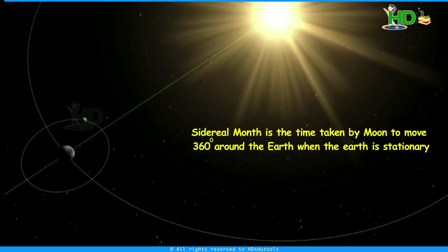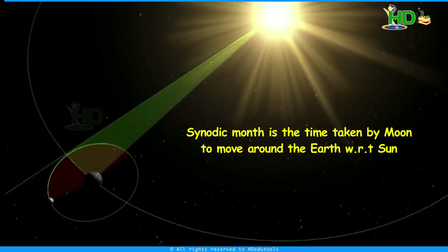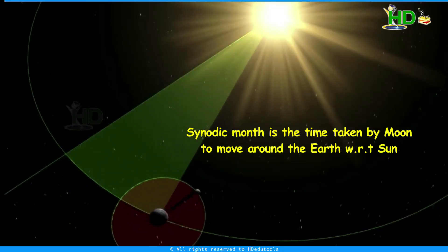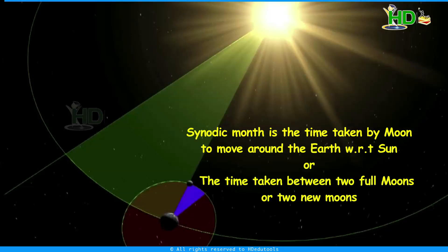The sidereal month is the time taken by the moon to move 360 degrees around the earth when earth is considered stationary. The synodic month is the time taken by the moon to move around the earth with respect to the sun, or the time taken between two full moons or two new moons.